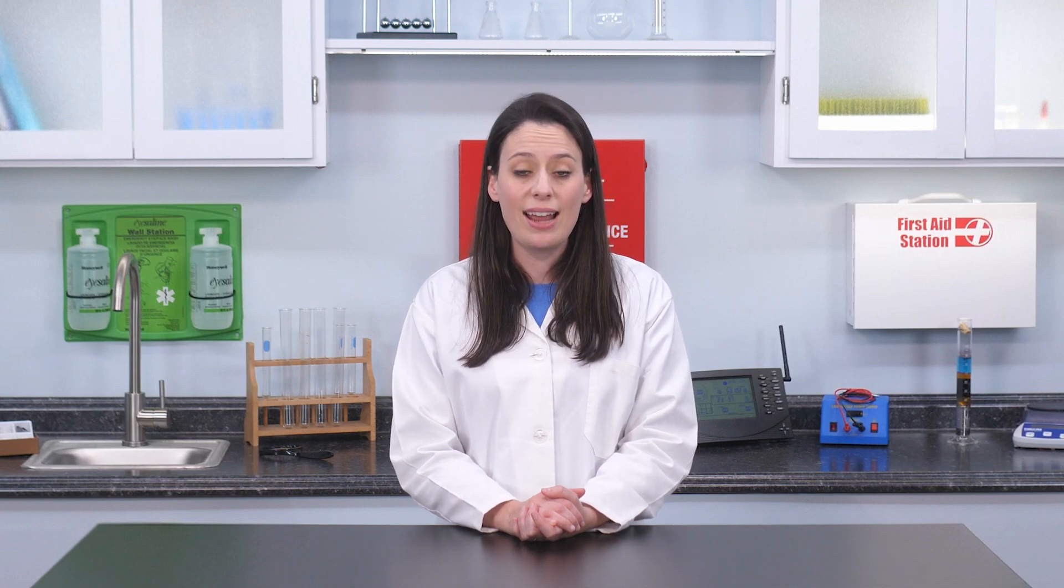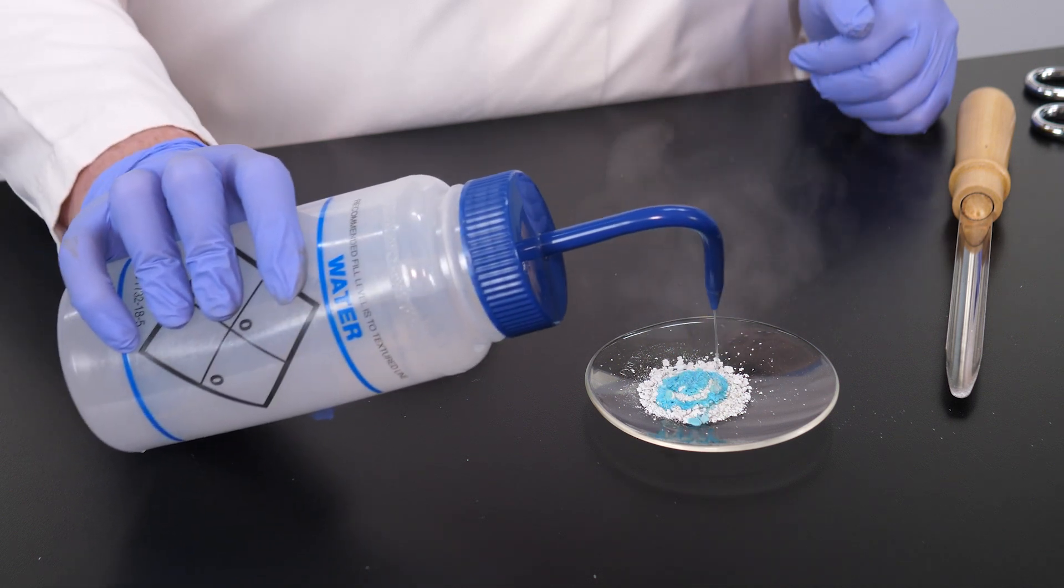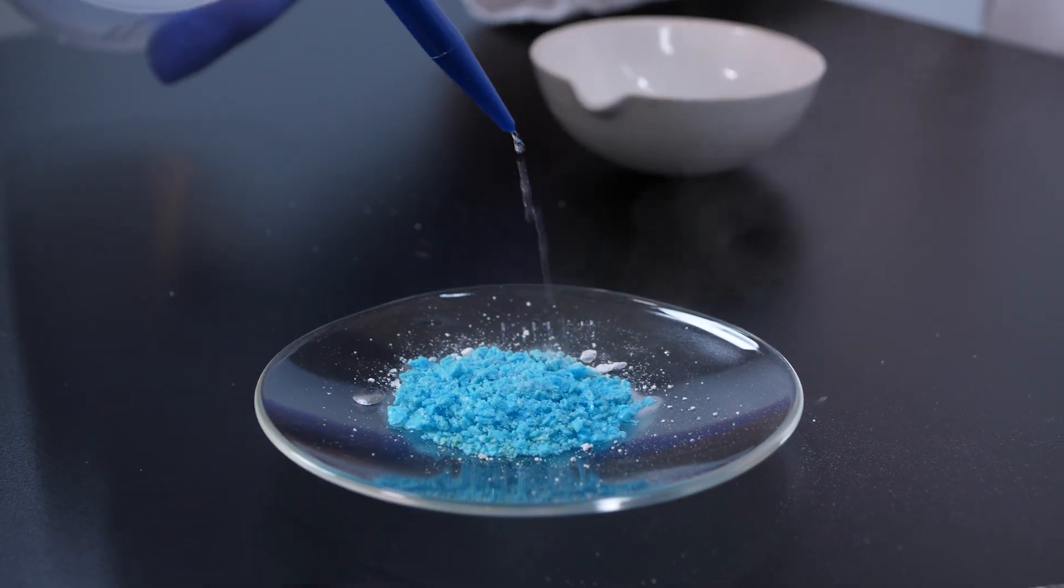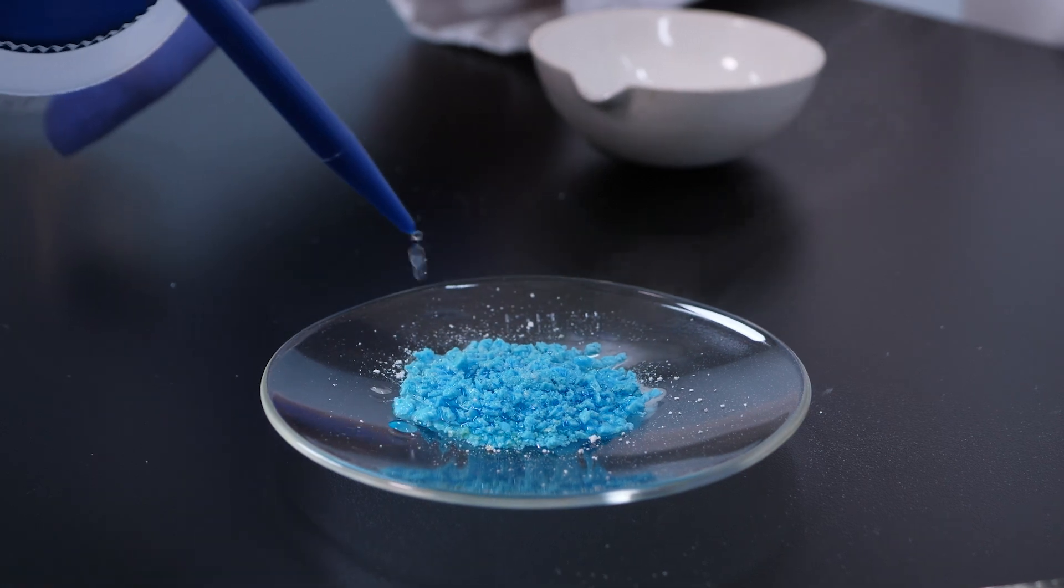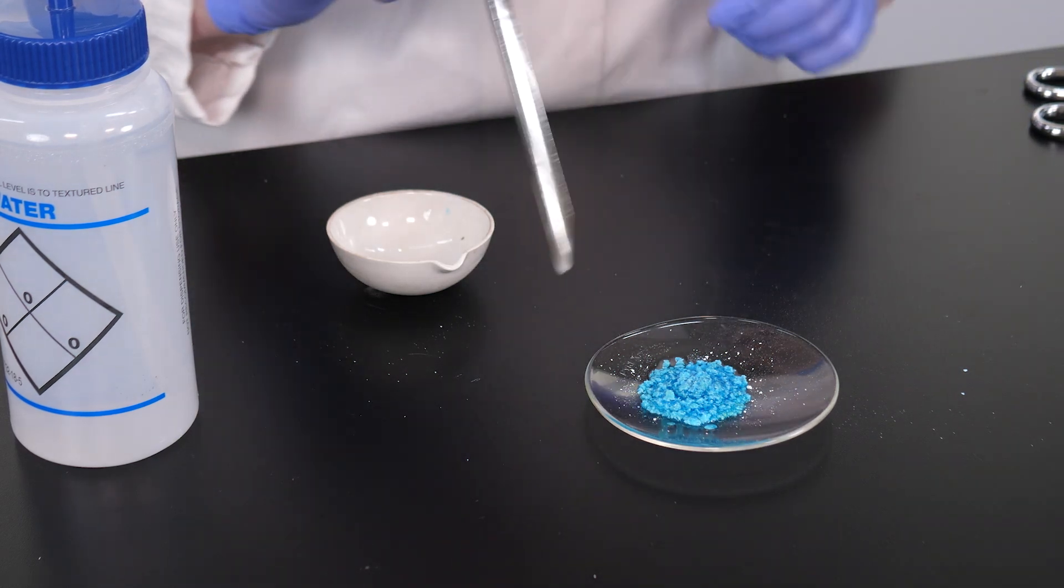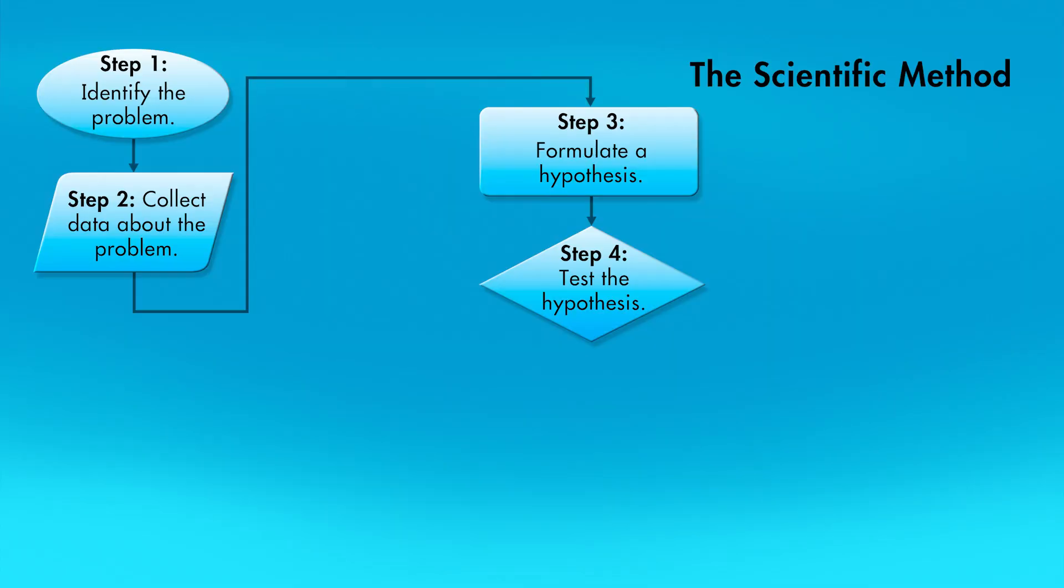To be absolutely certain this is anhydrous copper sulfate, we should perform one final test. We will rehydrate the crystals by adding water back into the anhydrous copper sulfate. By adding water to the white, anhydrous substance, the crystals turn blue again. From our research, we learned that copper sulfate is the only compound that turns blue when it is hydrated, which supports our hypothesis that this is, indeed, copper sulfate pentahydrate.